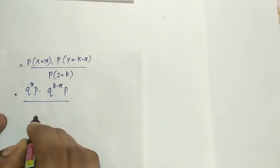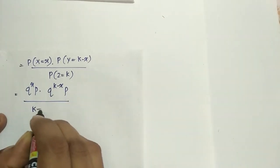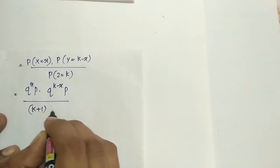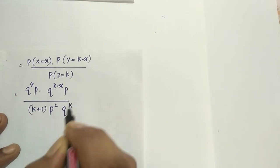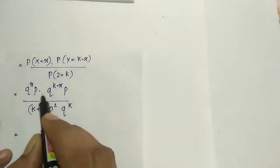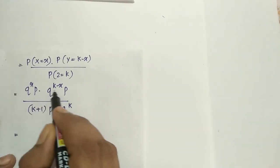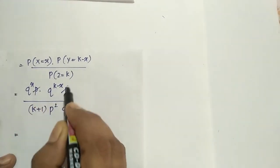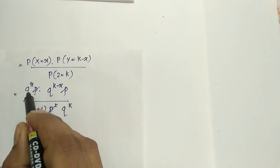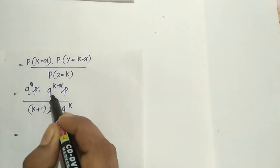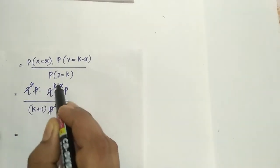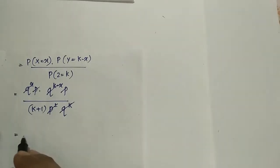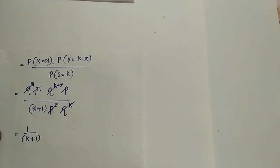So in the numerator we have p squared times q to the x times q to the (k minus x), which gives p squared times q to the k. In the denominator we have (k plus 1) times p squared times q to the k. The p squared and q to the k cancel, leaving 1 divided by (k plus 1).